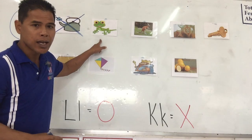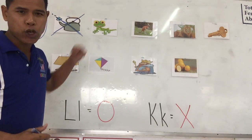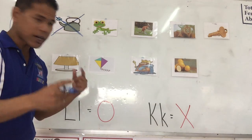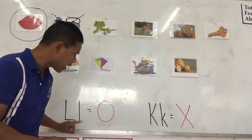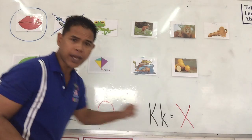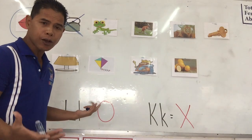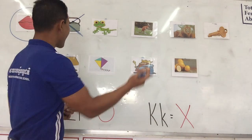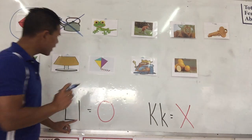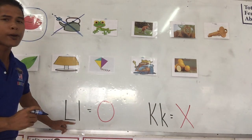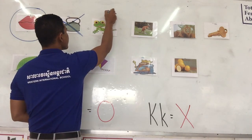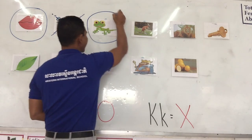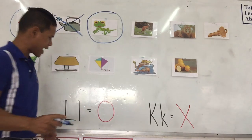Next one is lizard. Lizard. Is it L or K? Yes, it is the letter L for lizard. So we circle it. Excellent job.